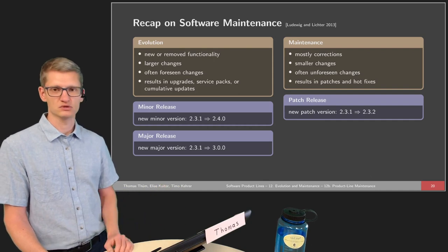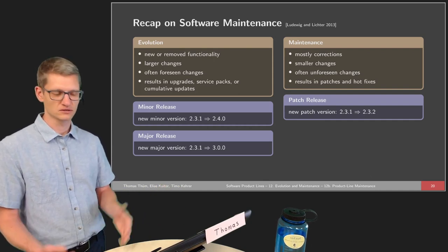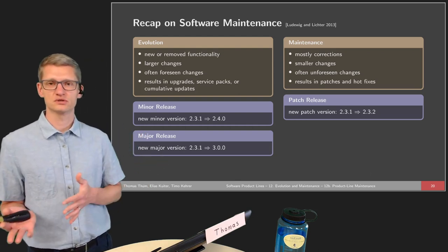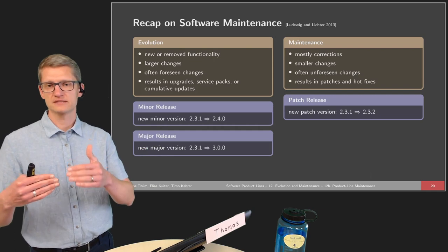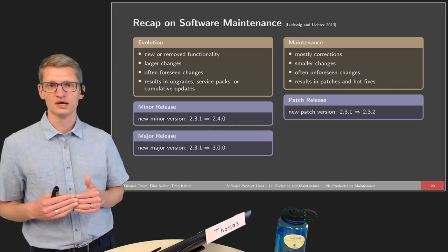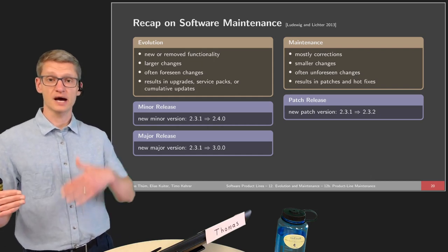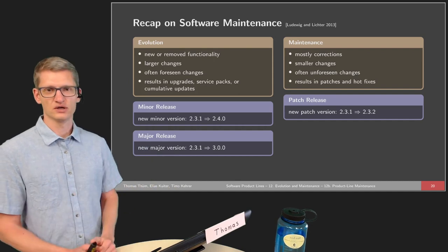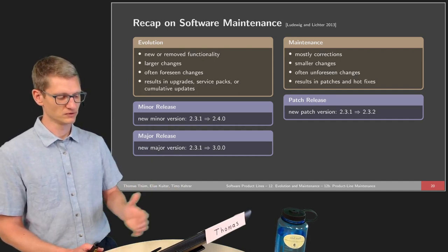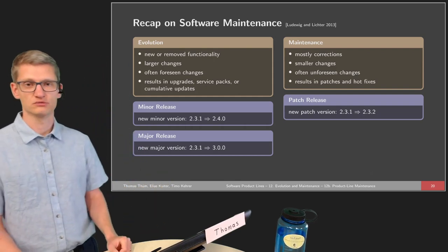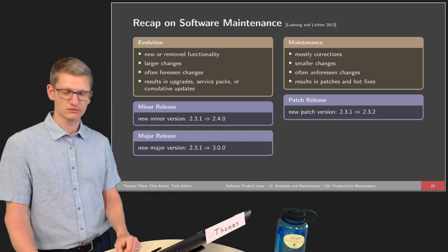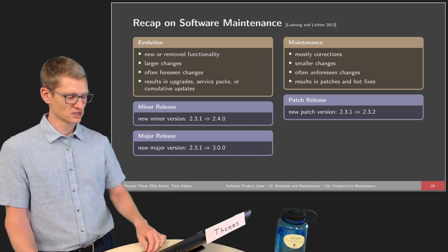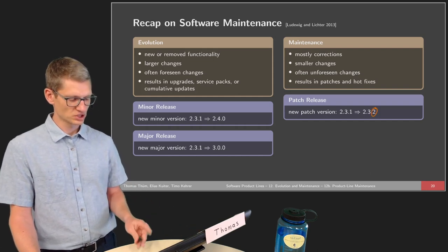Of course, sometimes we are already aware of some problems. For instance, for the Windows operating system, certain problems are not fixed on purpose because they have low priority or because making the change has a higher risk of introducing new problems. Maintenance typically results in patches and hot fixes. A patch release is reflected by means of semantic versioning — only the last digit (the patch version) changes in the version number.